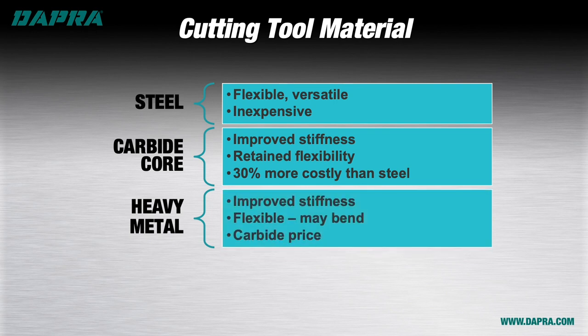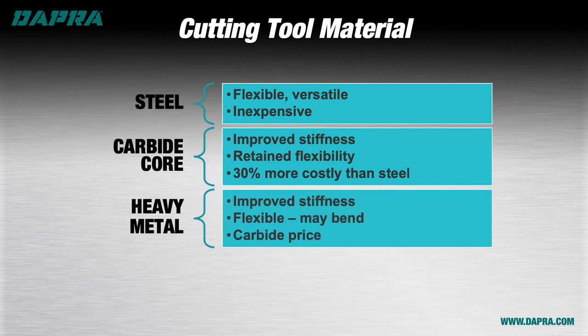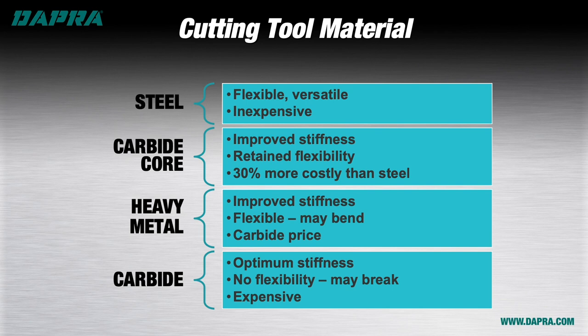Heavy metal is even more dense and does a good job of resisting deflection and dampening vibrations, but it is expensive — sometimes more so than carbide — and can bend permanently if it suffers a strong enough blow. Carbide is the stiffest choice for cutting tool material and is the most commonly used for round tools. It's also available for many indexable cutter bodies, but generally recommended for semi-finishing and finishing applications. Carbide is a costly option and will break if it encounters excess radial or side tool pressure.